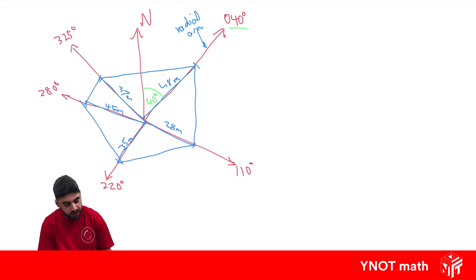To get each subsequent angle inside, you just take the bearing on that radial arm and subtract the previous one. So 110 minus 40 is going to give us 70 degrees for this one. Then we're going to do 220 minus 110 to give us 110 degrees in the middle here.